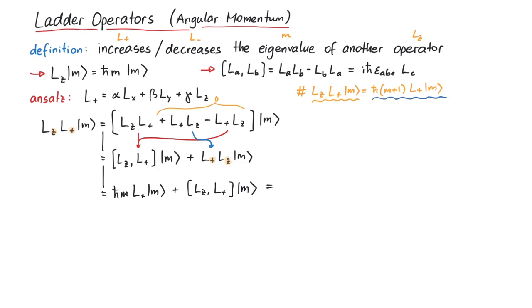This still has to be equal to the right-hand side, which is h bar m plus 1 times l plus m. We can now subtract this term, which leaves us with this equation. Also let's get rid of m, since this equation should hold for any state m. This leaves a very simple operator equation. The commutator of l z with l plus has to be equal to h bar l plus.